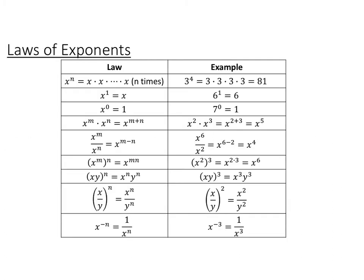This slide is a review of laws of exponents — pause the video and write these down. An exponent is repeated multiplication: multiplying something by itself n times is the same as x to the n. Anything to the first power is itself. Anything except zero to the zero power is 1. If you multiply two things with the same base, add the exponents. If you divide two things with the same base, subtract the exponents. If you raise a power to a power, multiply the exponents.